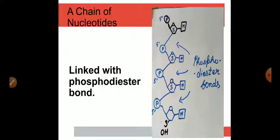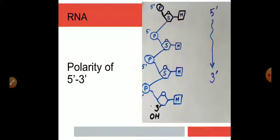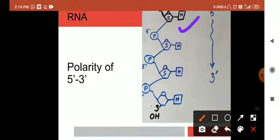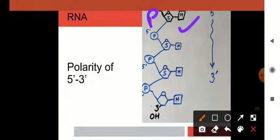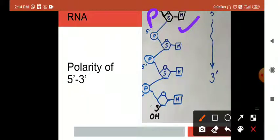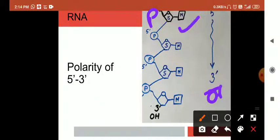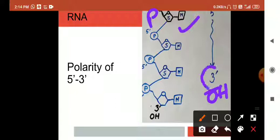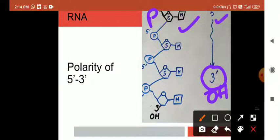Now this chain is linked with phosphodiester bonds. In RNA, you have a single chain and it has a polarity of 5' to 3'. How? Now let's see here. The first one is phosphate. The nucleotide is phosphate. And the last one is 3'OH position.